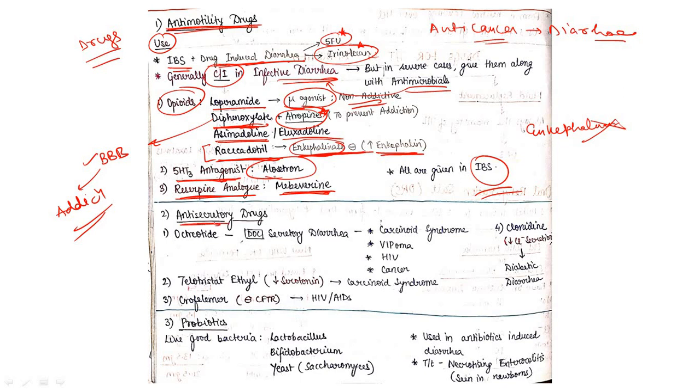Moving to the second group of drugs: anti-secretory drugs, which decrease secretion. Antimotility decreases motility - by decreasing motility, it will decrease diarrhea. Anti-secretory means it will decrease secretions.